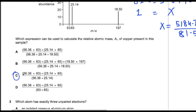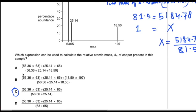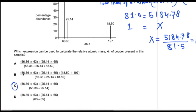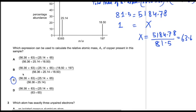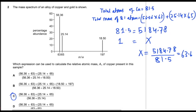Without solving in full, you can identify the answer: multiply 56.36 by 63 and add 25.14 multiplied by 65, then divide by the total atoms 56.36 plus 25.14. This gives the relative atomic mass of copper. Option C is the correct expression.